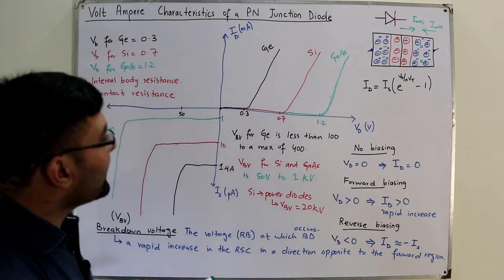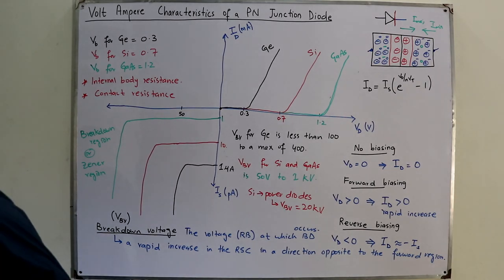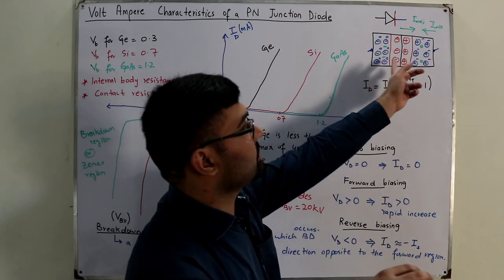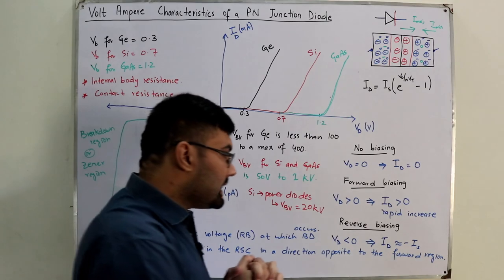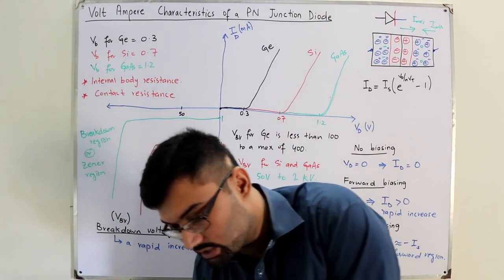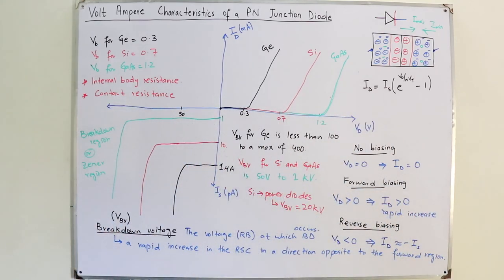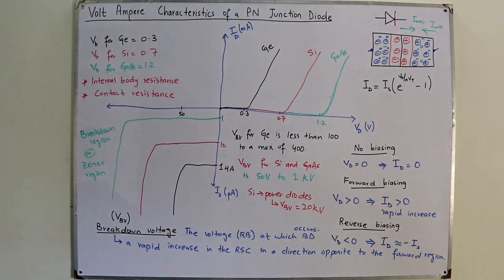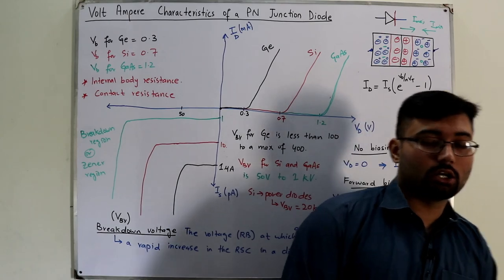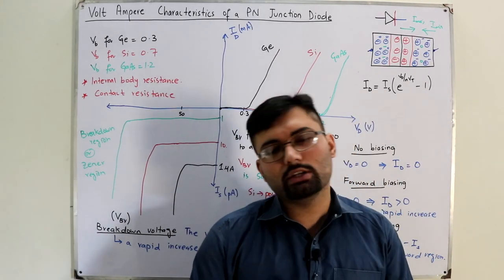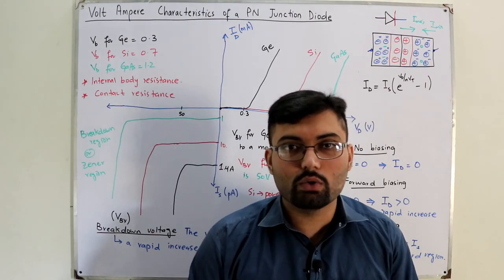The electron mobility factor determines the operating speed of the device. Gallium arsenide has a mobility factor more than five times that of silicon and twice that of germanium. Silicon is used in systems in the gigahertz range. That concludes this video — see you in the next video covering the breakdown region. Take care of yourselves and everyone around you. Goodbye.